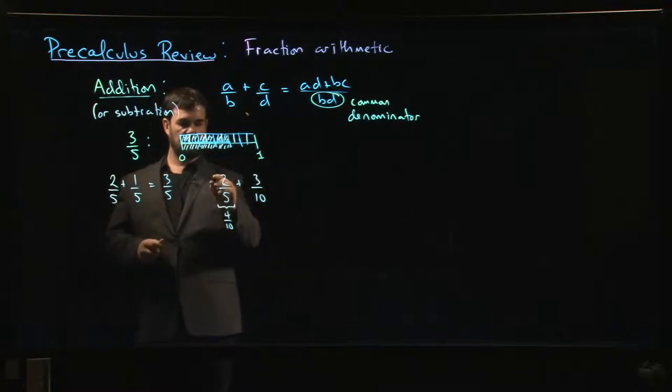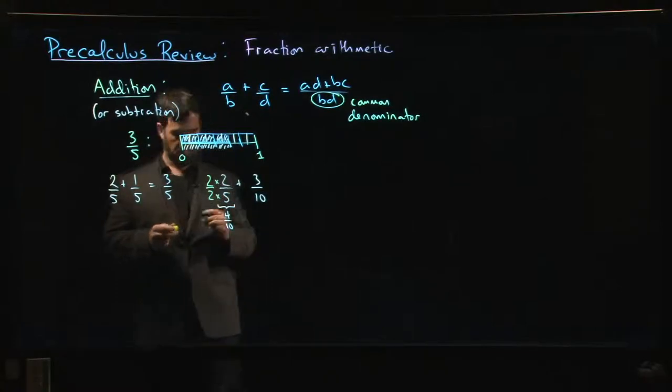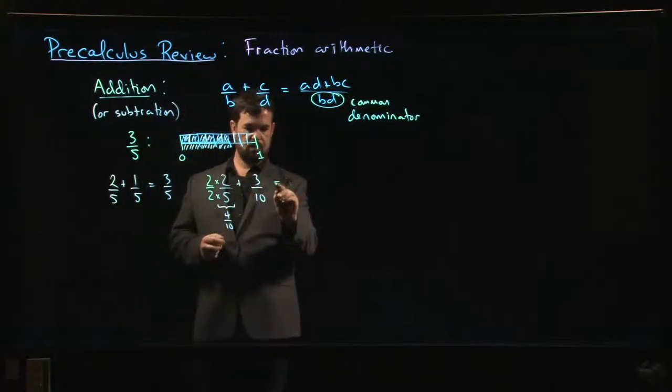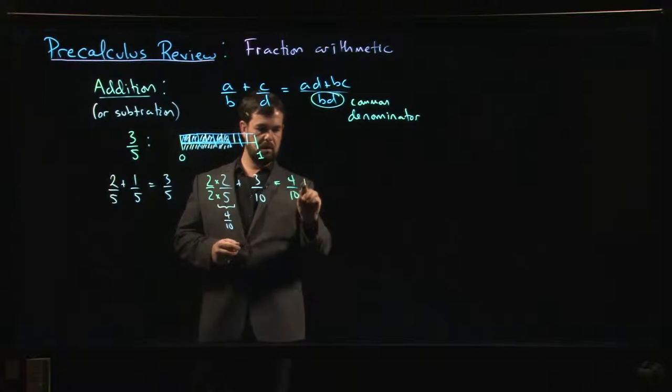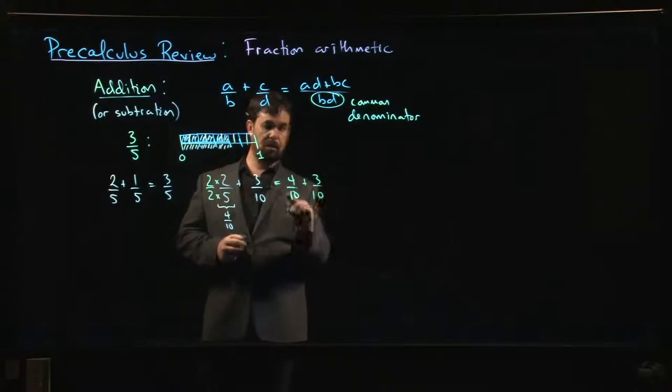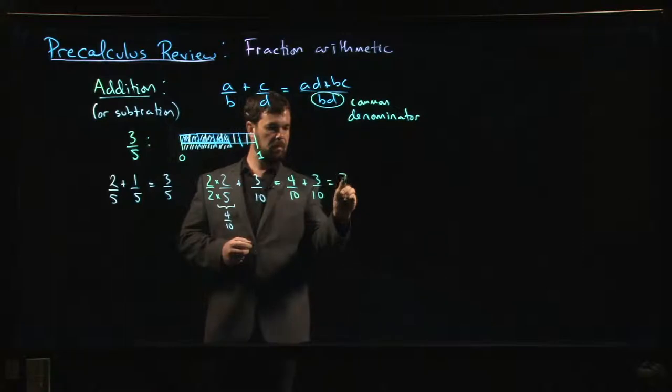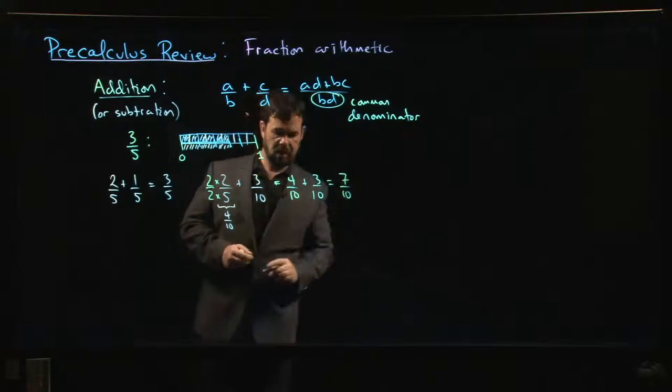The way you do the conversion—this notion of equivalent fractions—is that you can always multiply the numerator and the denominator by the same thing without changing it. So we go two over two: two times two, two times five. Two times two gives me that four, two times five gives me the ten. We add the three-tenths.